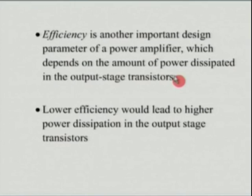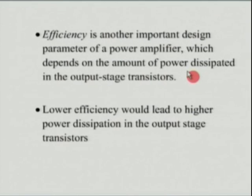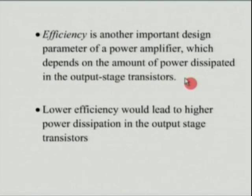When you talk about a power amplifier, the power levels are large. Power amplifiers generally refer to applications delivering power of more than a watt — typically 10 watts or above. Therefore, efficiency is an extremely important parameter. It is not just the amount of power being wasted, but in most applications, it is the amount of power you need to dissipate that will be the main concern. If I have an efficiency of only 10 percent and I'm delivering 10 watts, I need to dissipate 90 watts — that is definitely not an option.